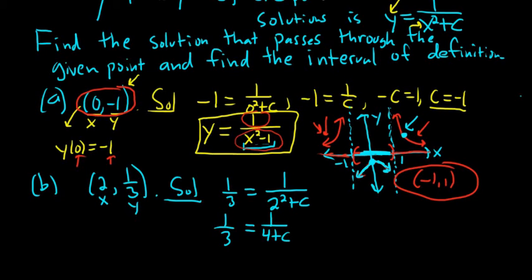And so we get 1 third equals 1 over 4 plus c. Then we can cross multiply. So we get 4 plus c equals 3. Subtract 4, so we get c equals negative 1. So we get exactly the same thing. It's totally rigged. So we already have the graph.